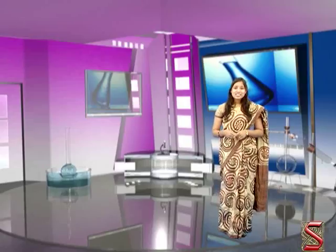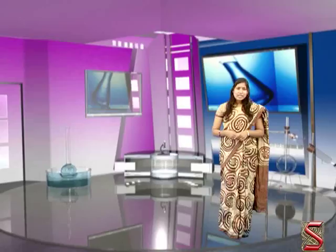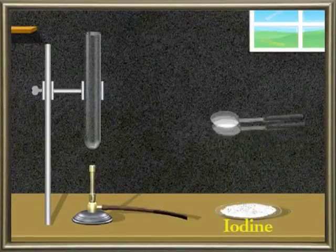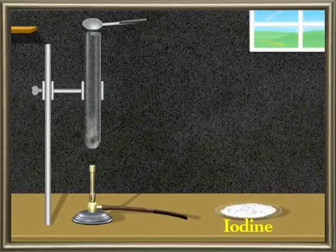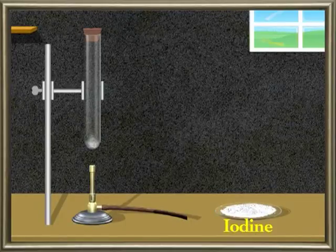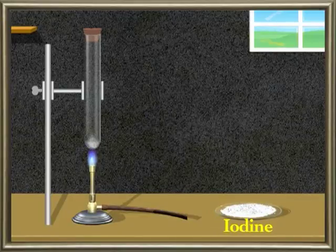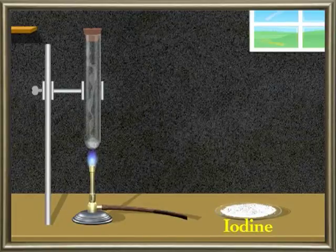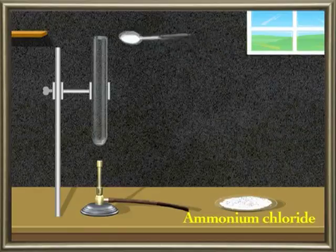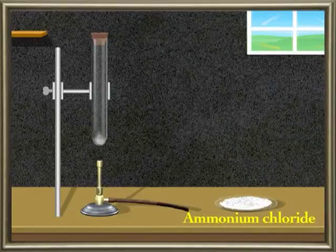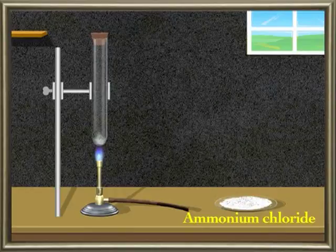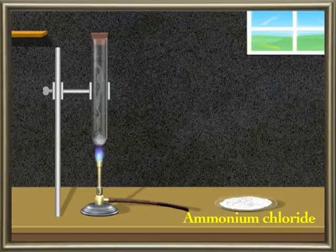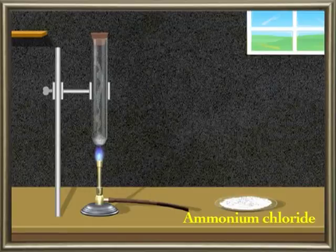Sublimation can be demonstrated experimentally. Take a few milligrams of iodine in a test tube and close it with a cork or glass lid. Heat the test tube gently — solid iodine slowly changes into vapour and deposits on the cooler parts of the test tube. Take ammonium chloride in a test tube and close it with a cork or glass lid. Heat the test tube gently — solid ammonium chloride vaporizes into white dense fumes and gets deposited as a white solid on the cooler parts of the test tube.